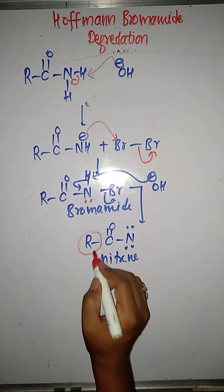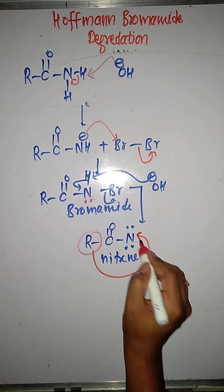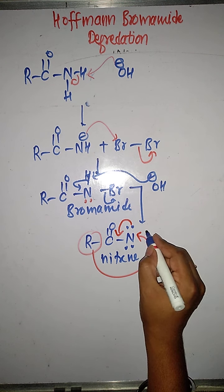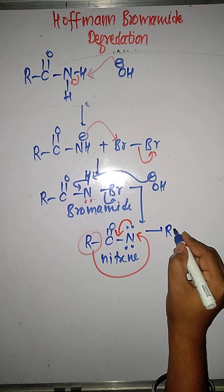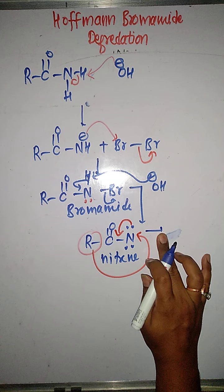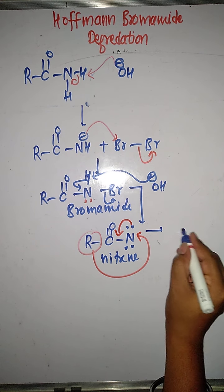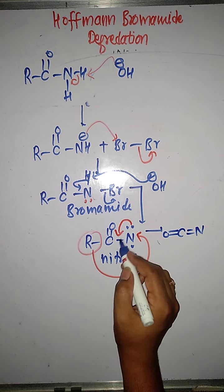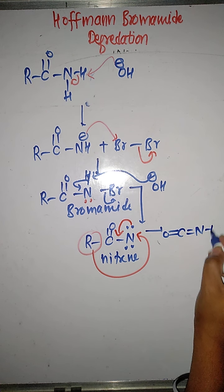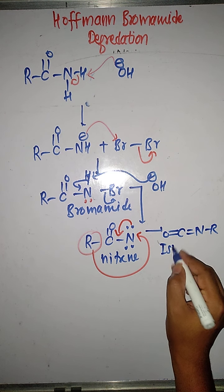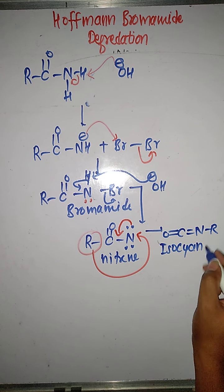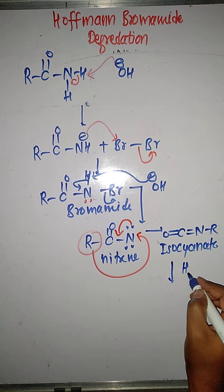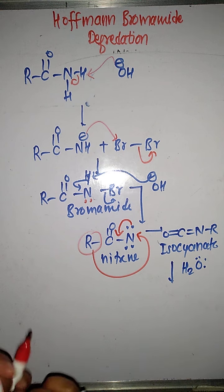Nitrenes are very unstable, so rearrangement occurs. The R group migrates: it shifts from carbon to nitrogen. Carbon is now double-bonded to oxygen on one side and double-bonded to nitrogen on the other side. This rearranged compound is called isocyanate.